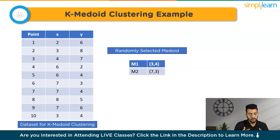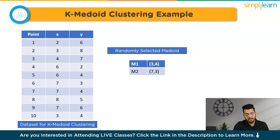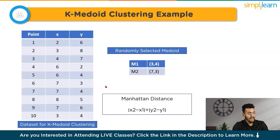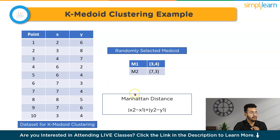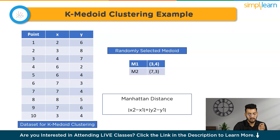The second step is to calculate the distance of each data point from the medoids. We use the Manhattan distance formula: |X2 - X1| + |Y2 - Y1|, ensuring the value is always positive. Once we find the distance of each data point from the medoids, we assign the data points to the cluster associated with the closest medoid.